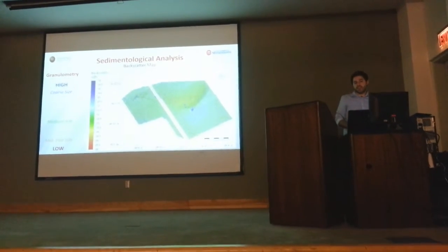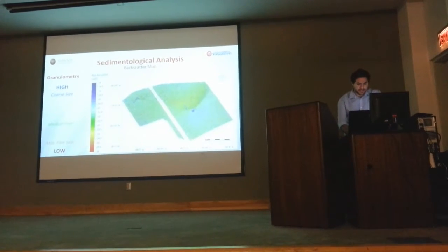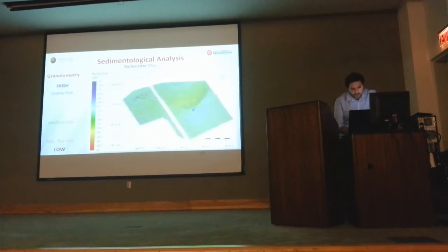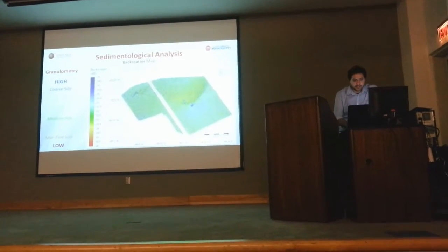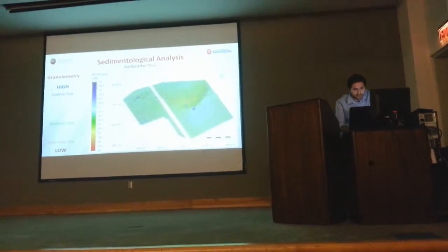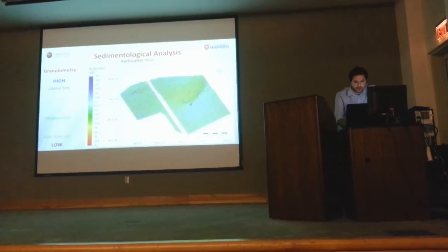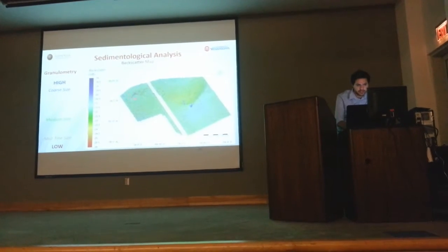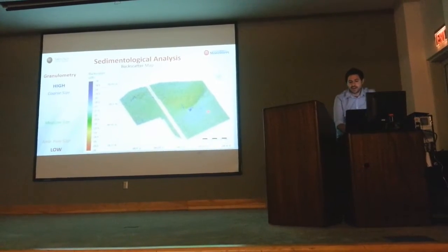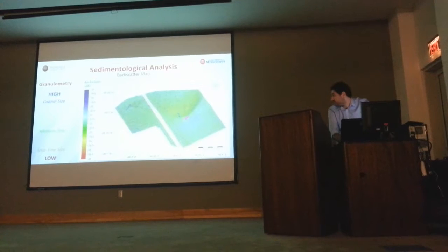Through the analysis of the intensity of the backscatter, we try to reconstruct the type and size of the sediment of the seabed. High backscatter values suggest that the sediment is coarse, while low backscatter values suggest that the sediment is medium to fine. On the slope, we have sediment with a medium backscatter value. We can also observe that within pockmarks and at the base of the slope, we have a high backscatter value — though this is an error during the processing, so it is not true.